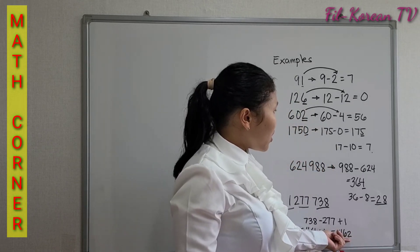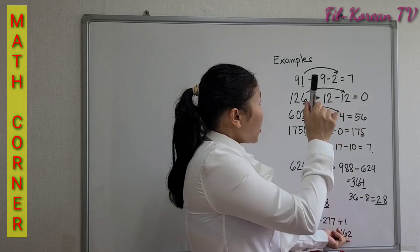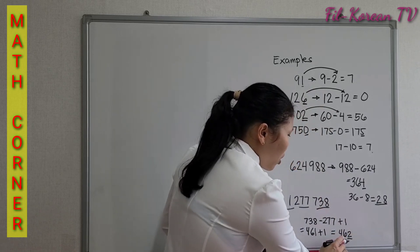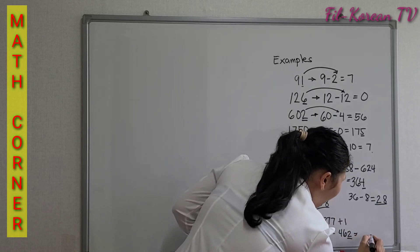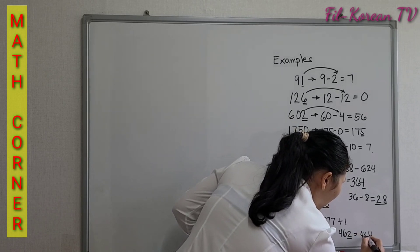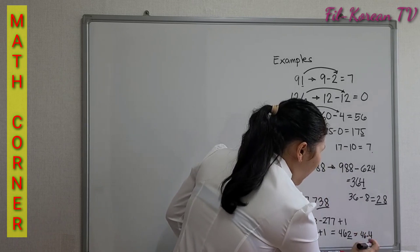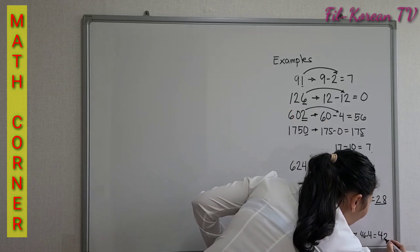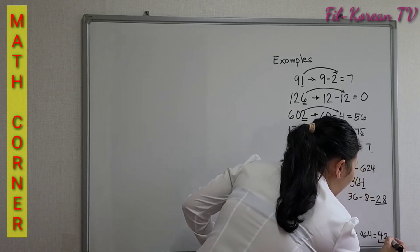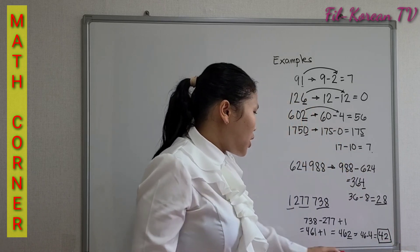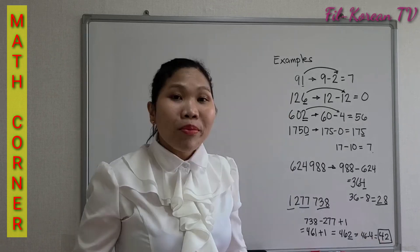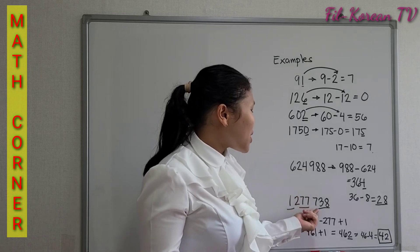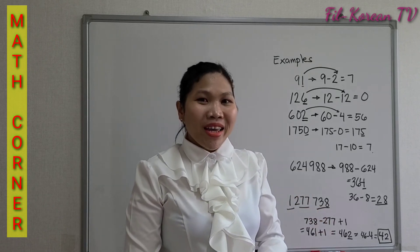Now if we cannot tell whether 462 is divisible by 7, we apply the first rule. Double the last digit 2: it becomes 4. Subtract from the remaining number 46: 46 minus 4 equals 42. Since 42 is a multiple of 7, therefore 1,277,738 is divisible by 7.